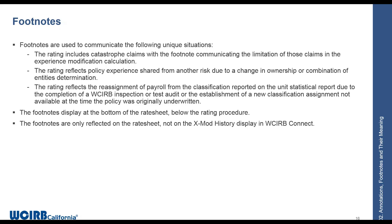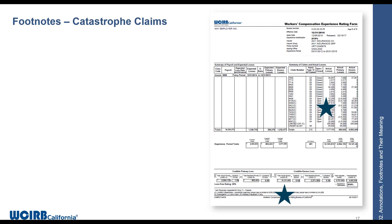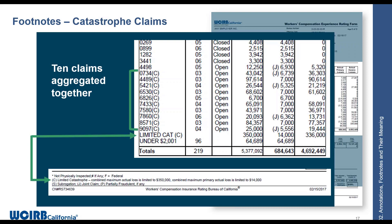Footnotes are reflected on the rate sheet and not on the XMOD history in WCIRB Connect. For catastrophe claims, individual claims in the actual losses section are denoted with a 'C'. We include the individual claim information but aggregate it into one line at the bottom, typically denoted 'CAT' with a 'C'. In this scenario, the catastrophe claim is limited to a maximum of $350,000 for actual losses and $14,000 for actual primary losses. The individual claim values are not included in the experience modification — only the total catastrophe claim value is used.